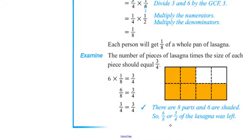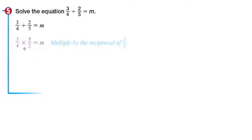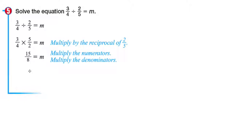For the last example, we want to solve the equation three-fourths divided by two-fifths equals M. We copy the problem. We keep our dividend three-fourths and get the reciprocal of our divisor two-fifths, which is five over two, then multiply: three-fourths times five over two. There is no common GCF between the numerators and denominators, so we simply multiply to get fifteen over eight. Converting to a mixed number gives one and seven-eighths. The solution is M equals one and seven-eighths.